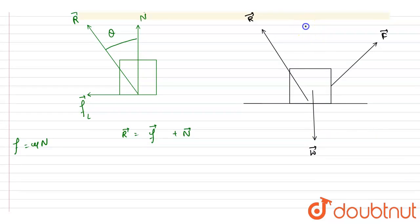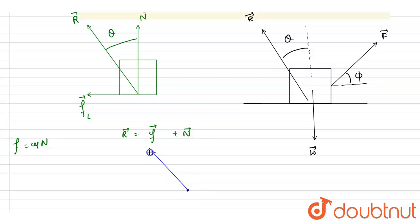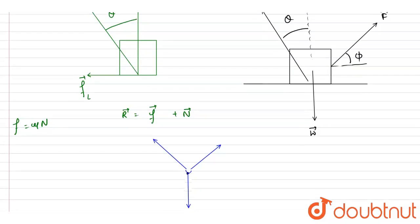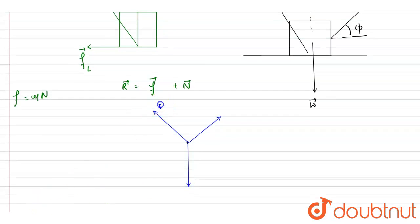If I write down the forces — this angle is theta and this angle is phi — the reaction force R acts at angle theta, the force F acts at angle phi, and W acts downward. For the block to start its motion, this reaction force will be at the angle of friction theta, which is the maximum limiting condition. We take this applied angle as phi.